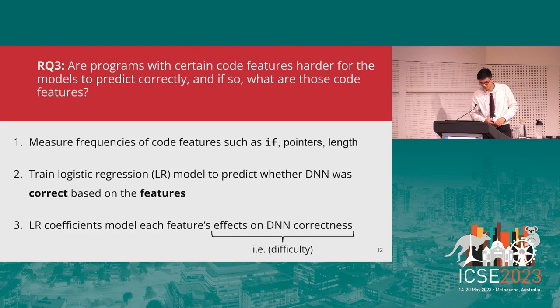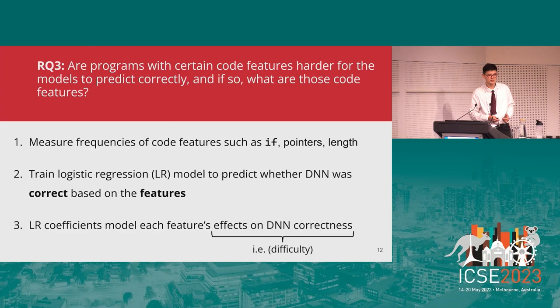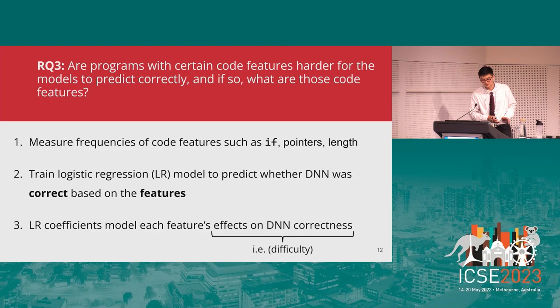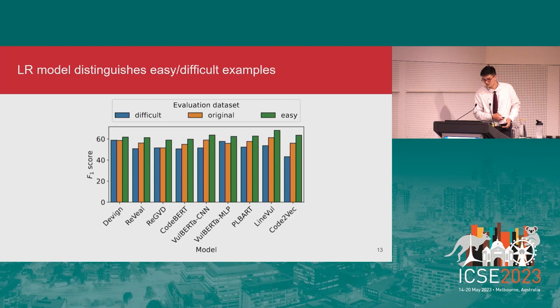For the next research question, we studied: are programs with certain code features harder for the models to predict correctly, and if so, what are those features? We measured the frequencies of code features such as if statements, pointers, and program length, then trained a logistic regression model to predict whether the deep neural network was correct based on these features. We then interpreted the logistic regression coefficients to understand each feature's effect on the deep neural network's correctness — another term for the difficulty of the example.